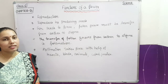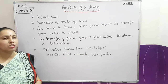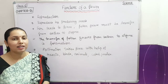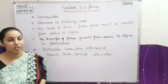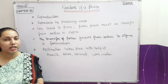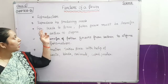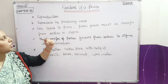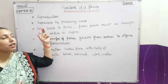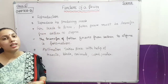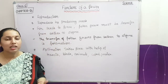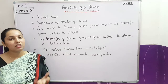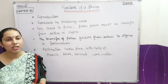Now we will discuss the functions of the flower. As you know, the main function of the flower is reproduction. How does reproduction happen? The flower reproduces by producing seeds. If seeds are being produced, it means reproduction is taking place.